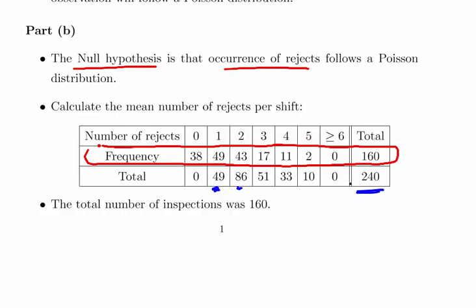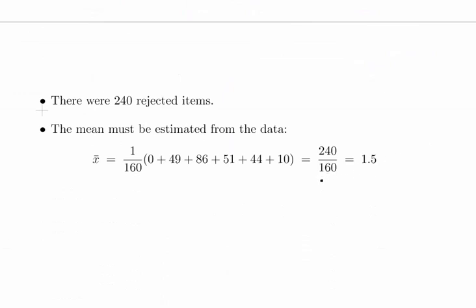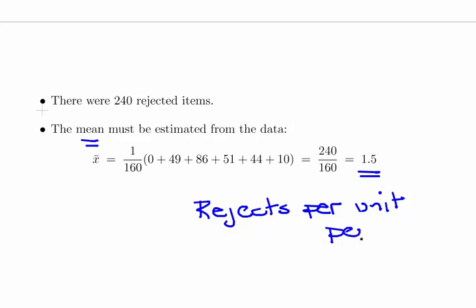Essentially there were 240 rejects altogether. This is a good bit of number crunching. You have to figure out that overall there were 1.5 rejects per shift on average. So the mean is 1.5 rejects per unit period on average.